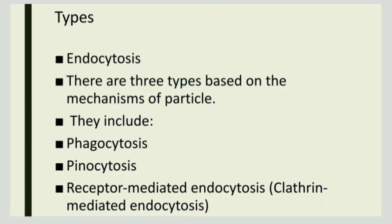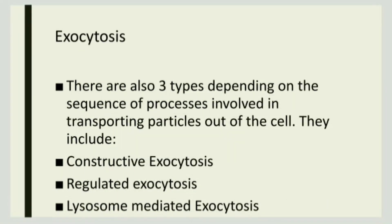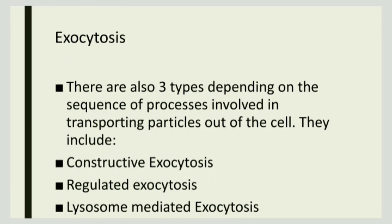So the three types of endocytosis are phagocytosis, pinocytosis, and receptor-mediated endocytosis. Now, the three types of exocytosis: the first is constructive exocytosis, which transports materials from inside to outside. Constructive exocytosis occurs when the vesicle membrane is surrounded by membrane proteins.